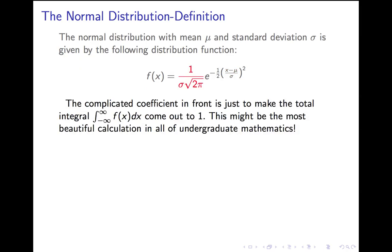Out front, you see a big mess that involves, of all things, the square root of 2π. That mess out front is only there because, remember, the integral of the function from minus infinity to infinity, the total area under the curve, has to equal 1. That number is stuck in there to make it equal 1.